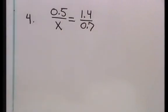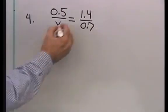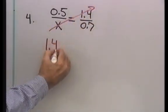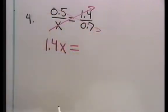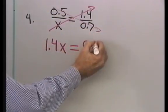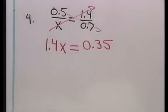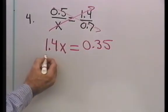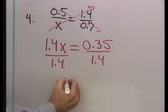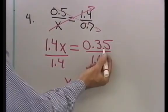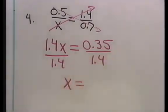Here's our next one. 0.5 over x equals 1.4 over 0.7. So, let's multiply x times 1.4. So, I have 1.4x is equal to 0.5 times 0.7. Well, that will be 0.35 when I multiply those two together. 0.35. So, now let's divide both sides by 1.4.